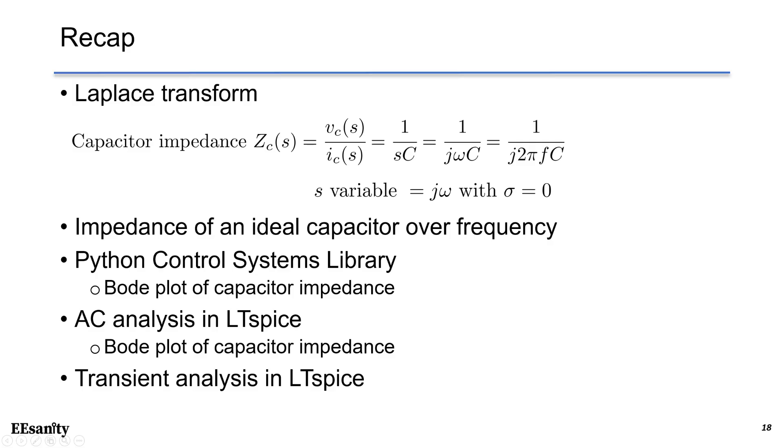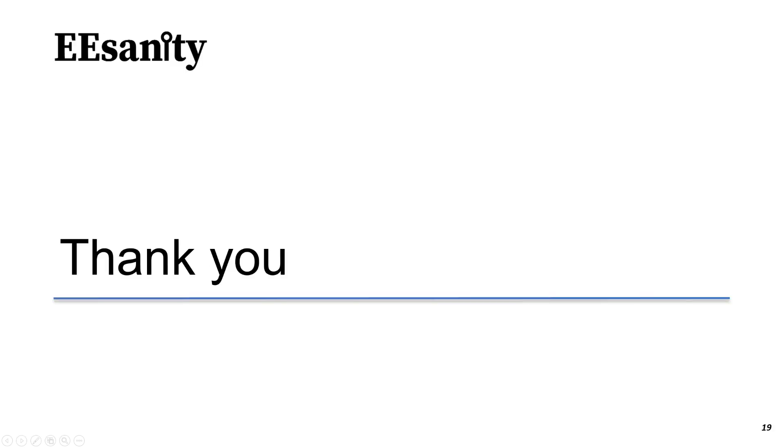Recap. In this lecture, we talk about Laplace transform and how to use them in finding the capacitor impedance. We understand why S variable is j omega and we can set sigma as 0. The impedance of an ideal capacitor over frequency is discussed. And we draw the Bode plot using Python and the AC analysis in LTSpice. In addition, we did some transient simulation using LTSpice to show you the waveform and current into the capacitor. In the future, I will show you non-ideal realistic model of capacitors. Thank you and see you next time.